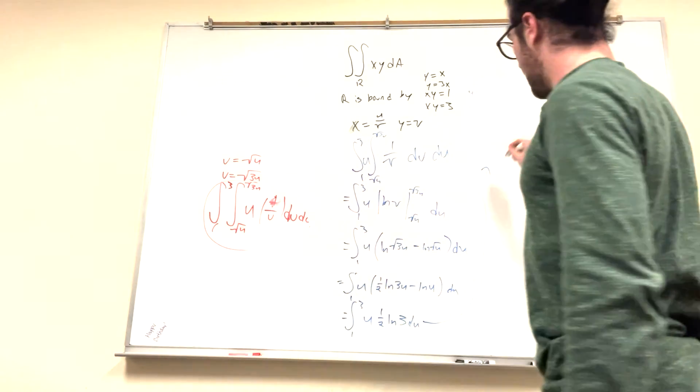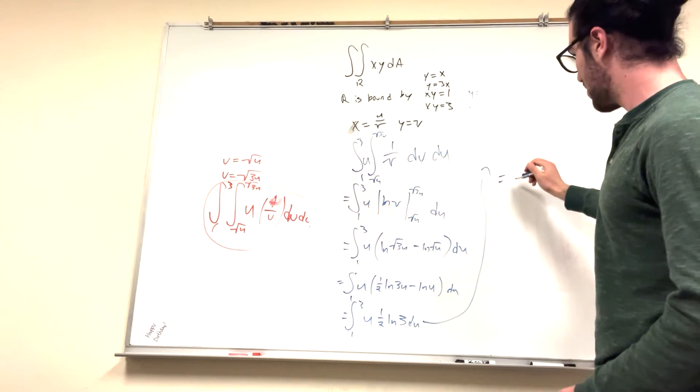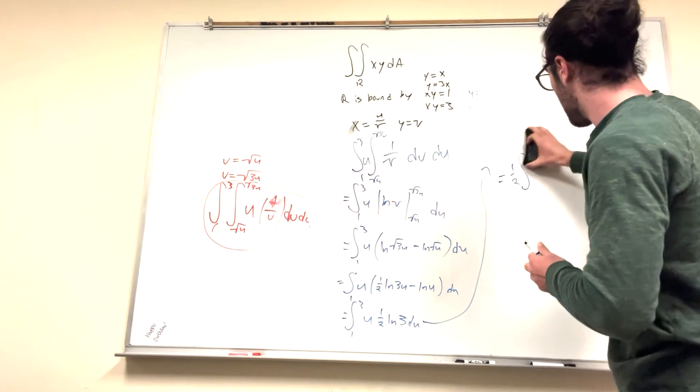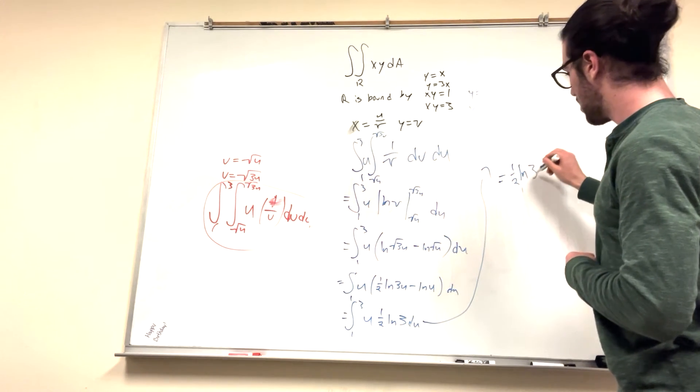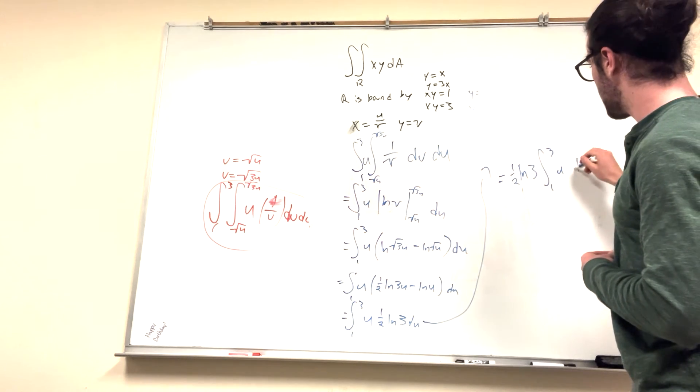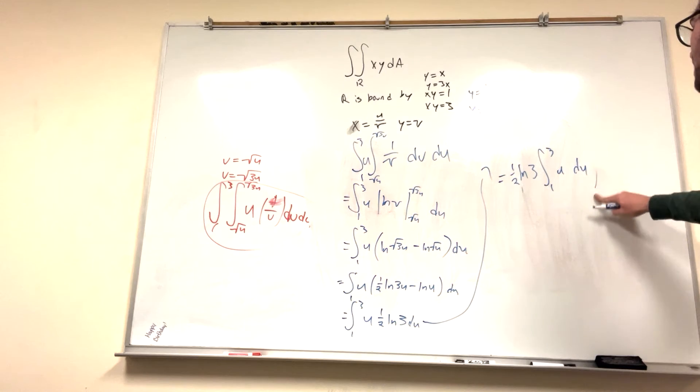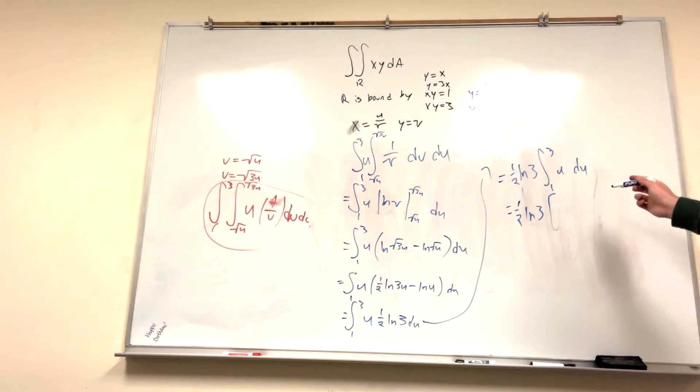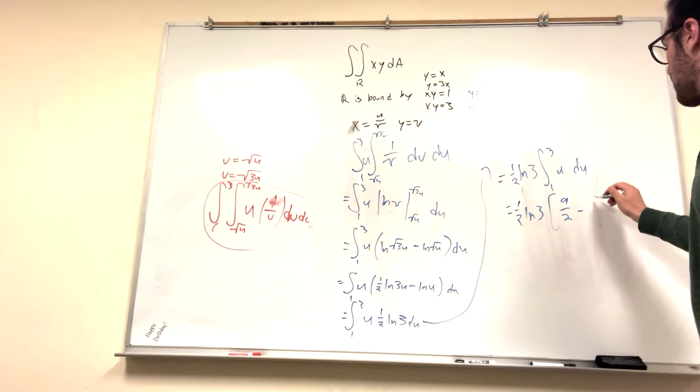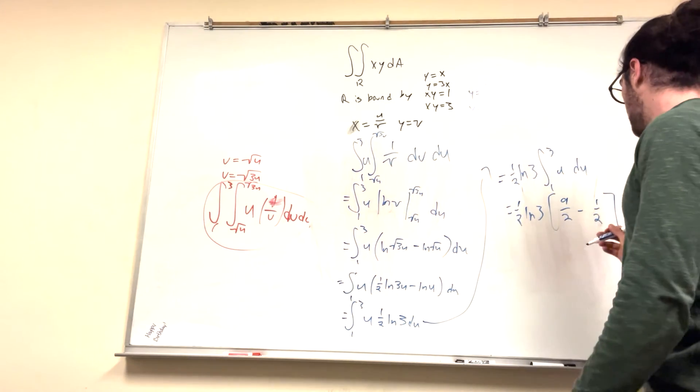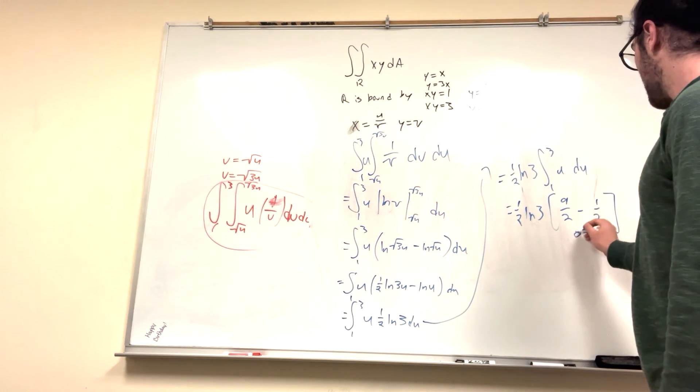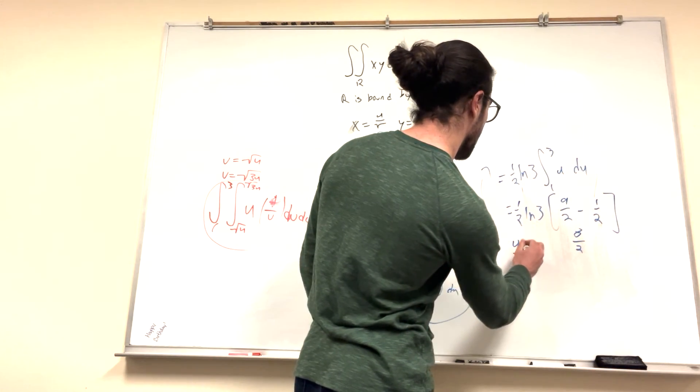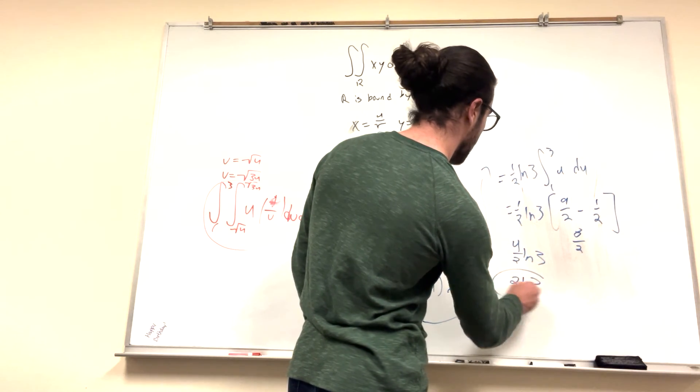So now we're almost done. This is equal to, so you can bring out the one-half ln of 3 because that's a constant. And then the integral from 1 to 3 of u du. I'm sure you guys know how to solve this at this point. What's it going to become? It's going to become one-half ln of 3. And it's going to be, so it's going to be 9 over 2 minus one-half, right? Solving this gives you, this is equal to 8 over 2, right? Then you take the one-half out, so it'll become 4 over 2 ln 3. This is awesome. It's equal to 2 ln 3. That's our final answer right there. 2 ln 3.